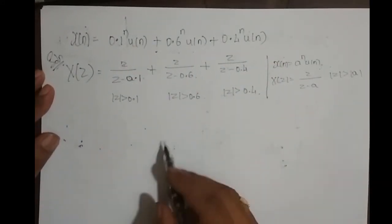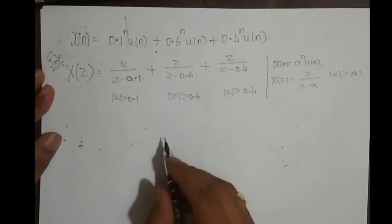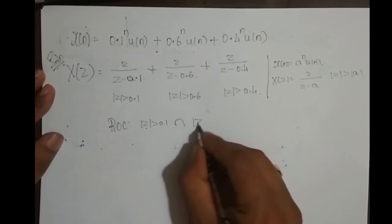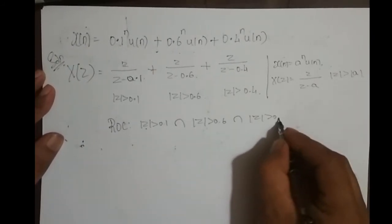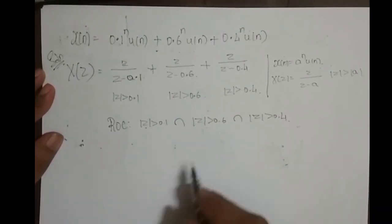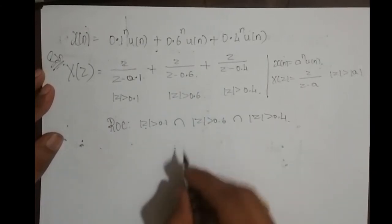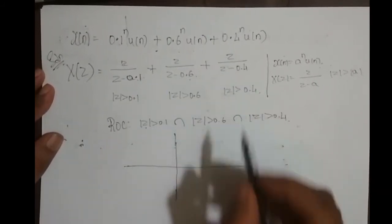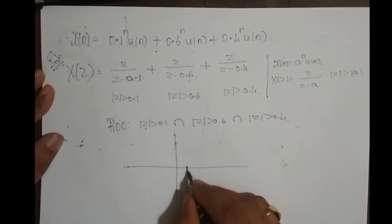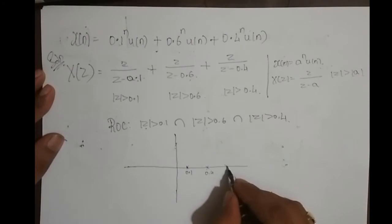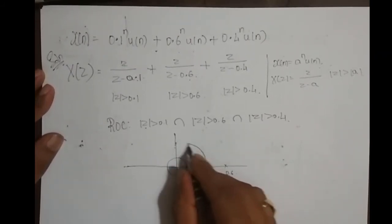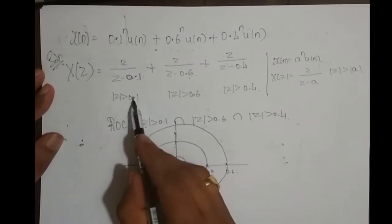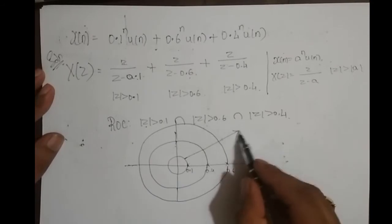Whenever we have more than one sequence in our signal, the combined ROC is actually the intersection of the individual ROCs. So the combined ROC is |z| > 0.1 intersected with |z| > 0.6 intersected with |z| > 0.4. The region where all three converge is the combined ROC. We have three poles, giving three circles: one at 0.1, one at 0.4, and one at 0.6.